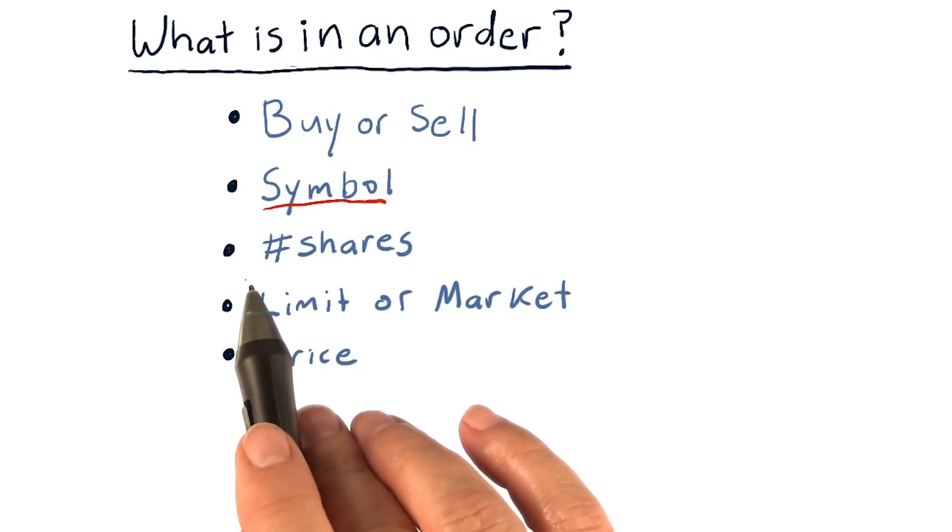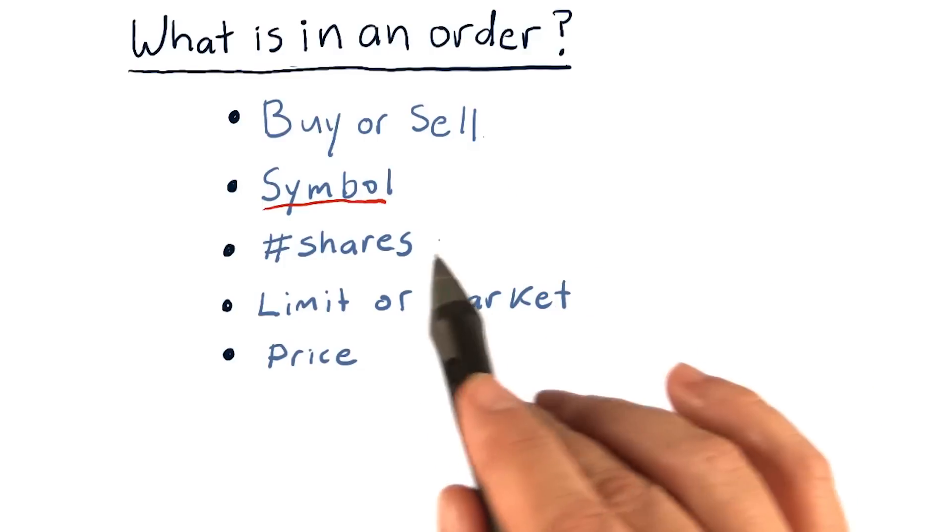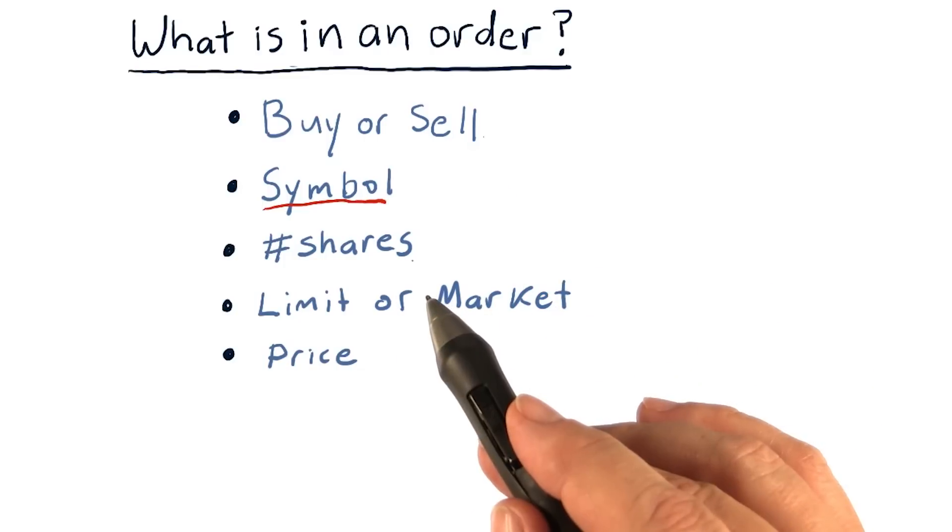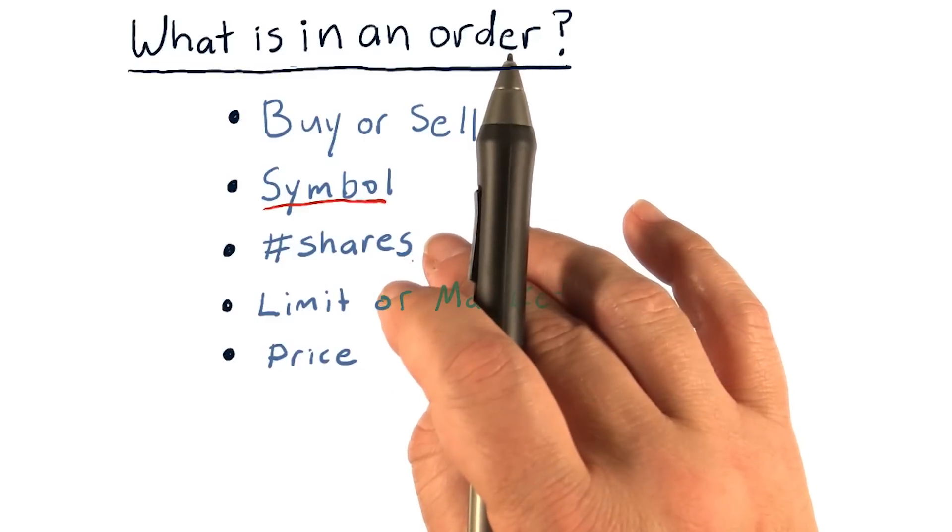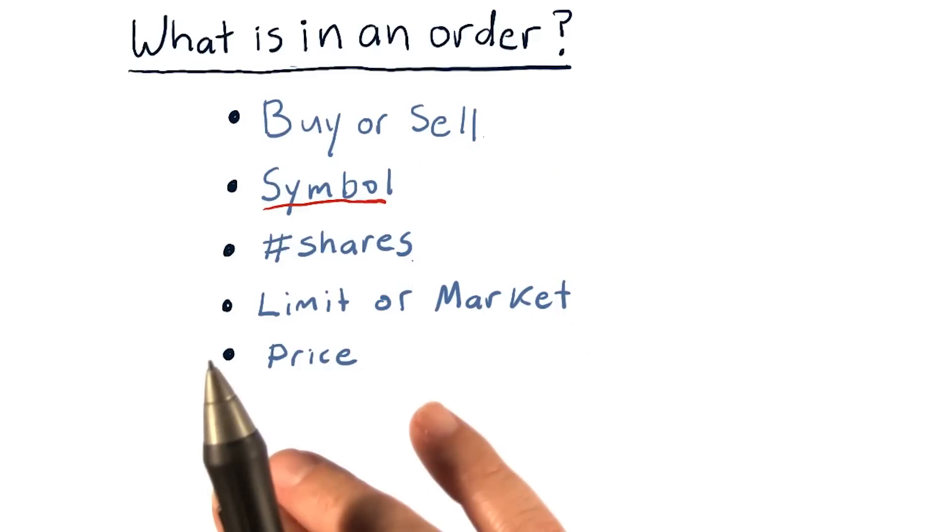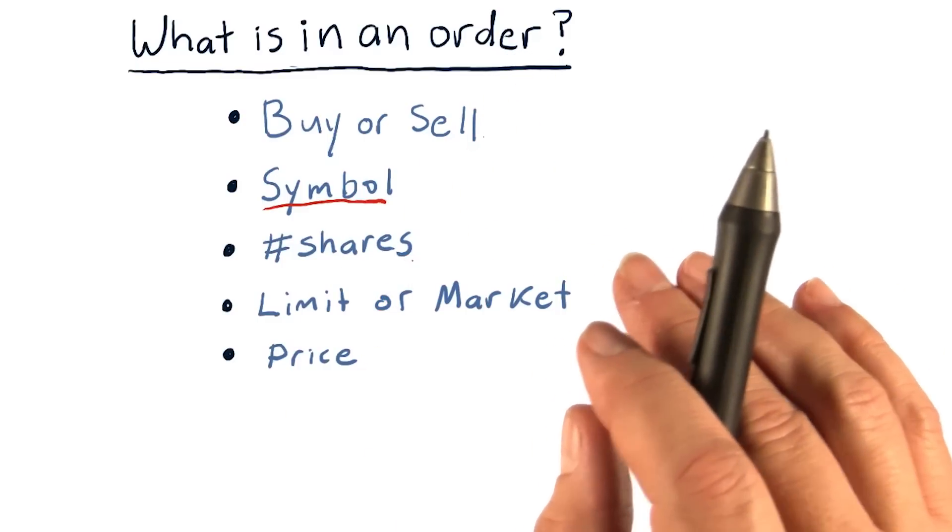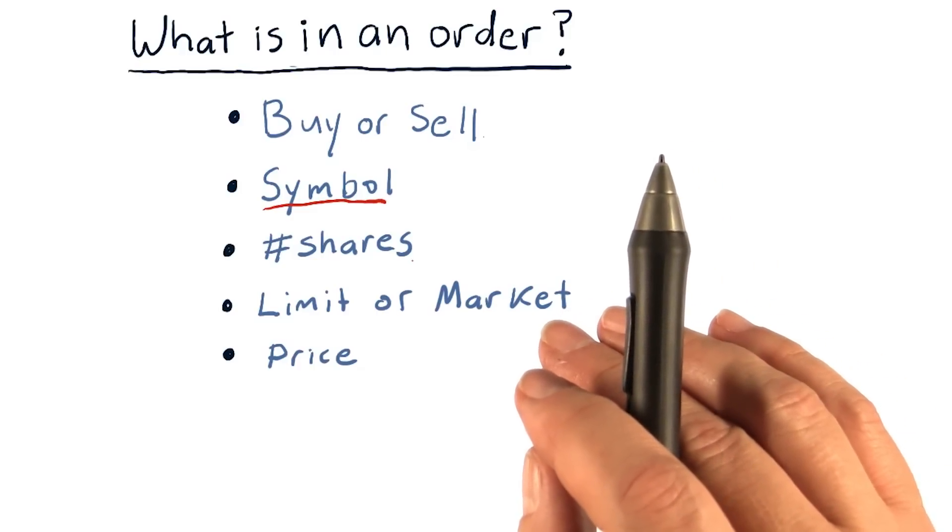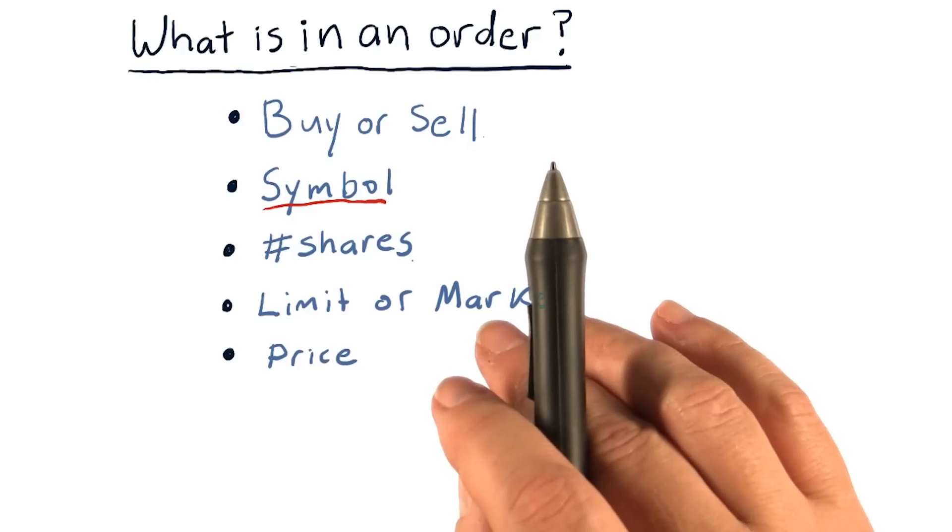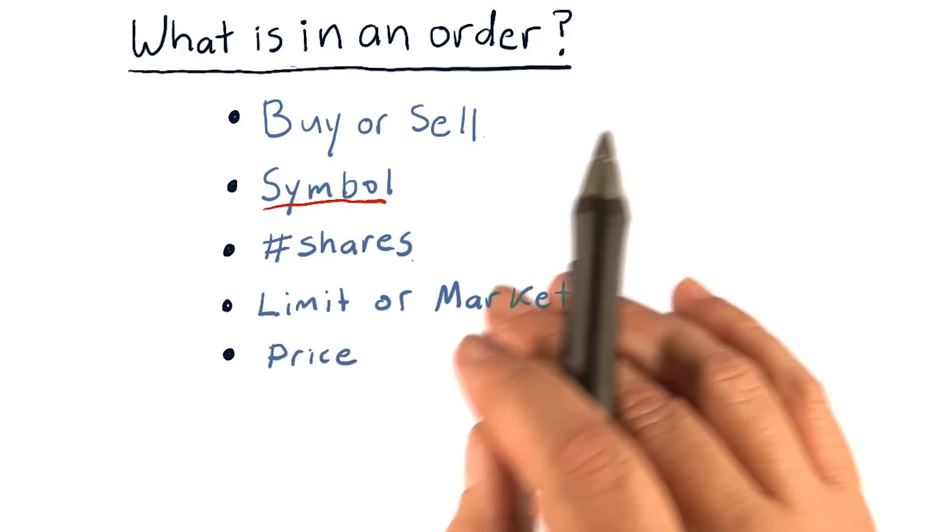Next, you need to tell your broker how many shares you want to buy or sell. Stocks and ETFs and other assets are sold in units of shares, not by amount of money. So you don't tell your broker I want $100,000 worth of Apple. You tell your broker I want 1,000 shares of Apple.